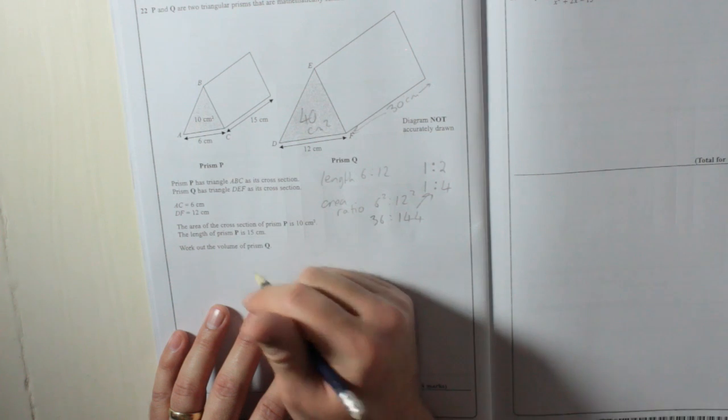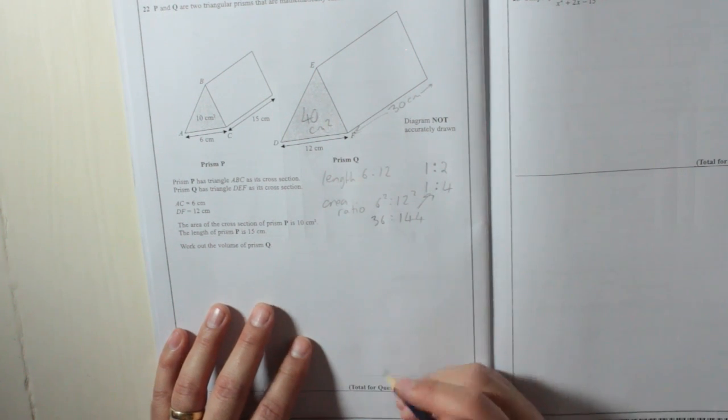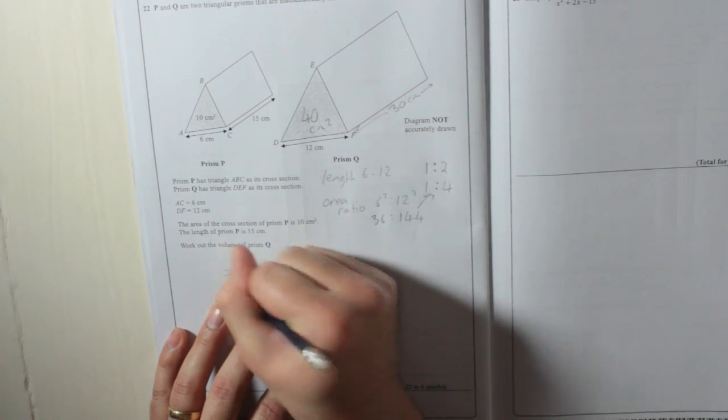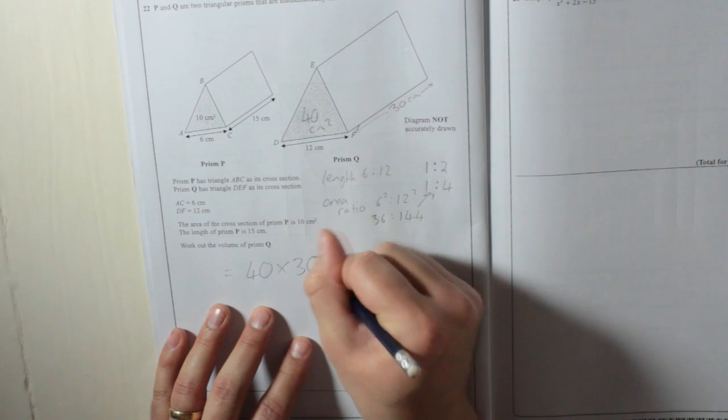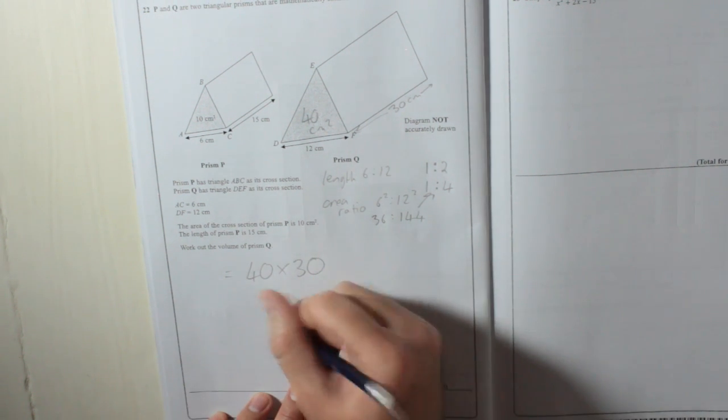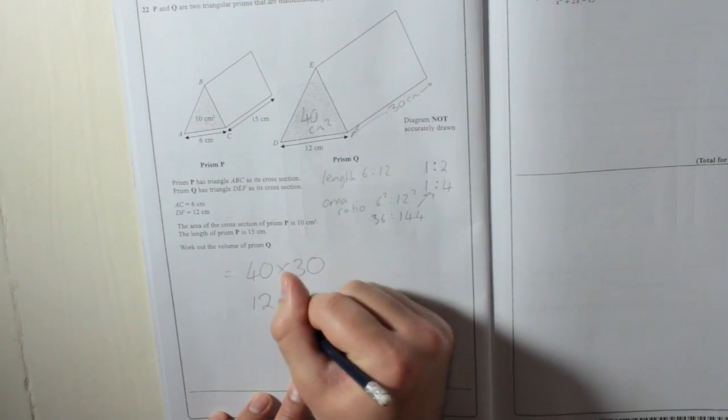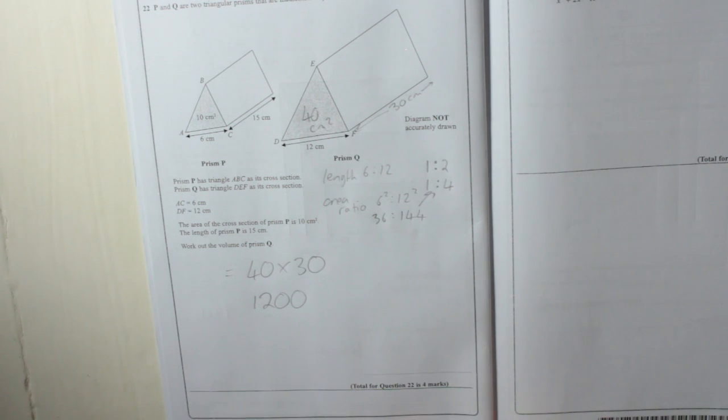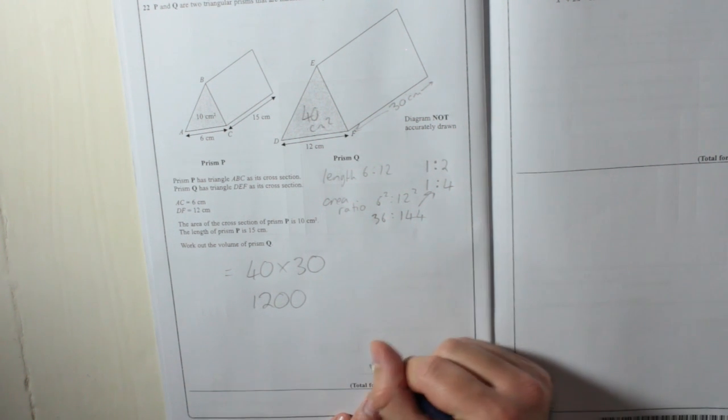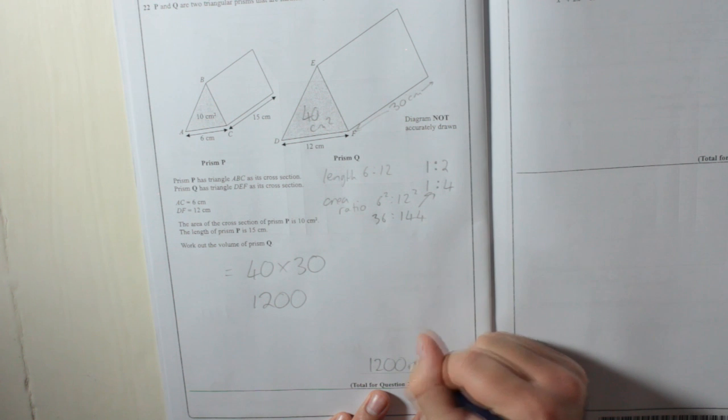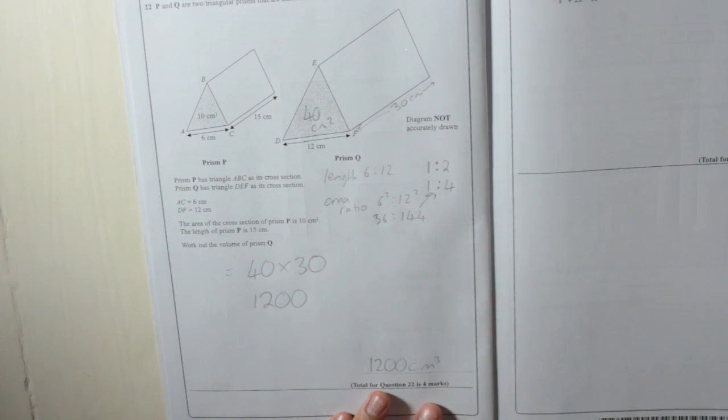So the volume of prism Q is 40 multiplied by 30. 4 times 3 is 12, two zeros. It's all in centimetres, so it's 1200 centimetres cubed. Don't forget your units.